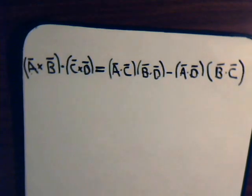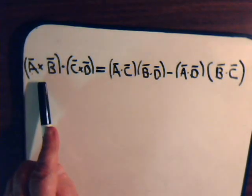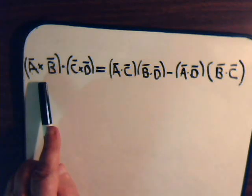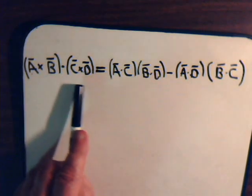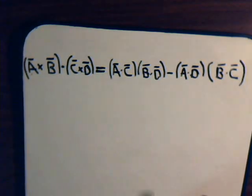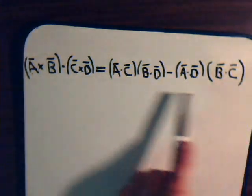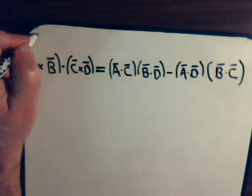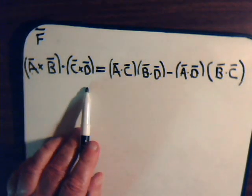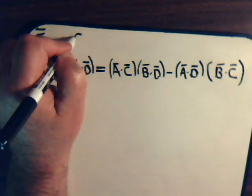What we have is a cross product A cross B, and that cross product vector, take the dot product of it with this cross product. We want to prove that it's equal to this expression. Now for A cross B, let's call that vector F. And C cross D, we'll call that vector G.